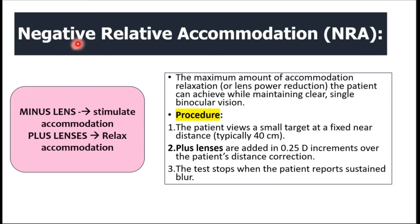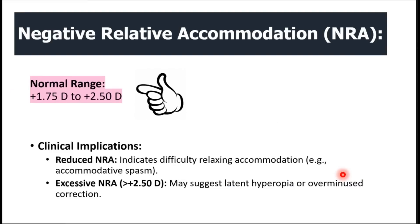In NRA, 'negative' means you are relaxing or reducing the power of the lens — reducing the accommodation by adding plus lenses. The point at which the patient can no longer sustain clear vision and reports sustained blur means the accommodation has been relaxed enough. The normal range is plus 1.75 diopters to plus 2.5 diopters. A reduced NRA indicates difficulty in relaxing accommodation and is seen in cases of accommodative spasm. Excessive NRA is greater than plus 2.5 diopters.